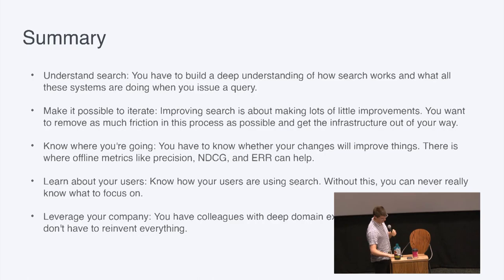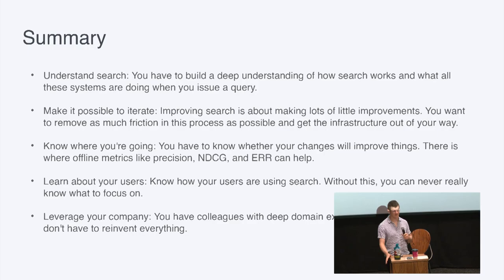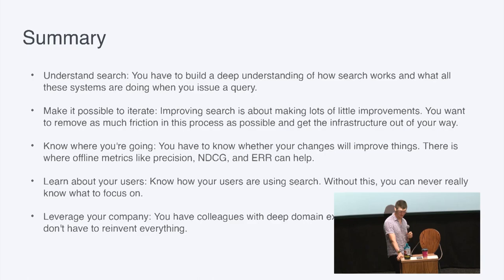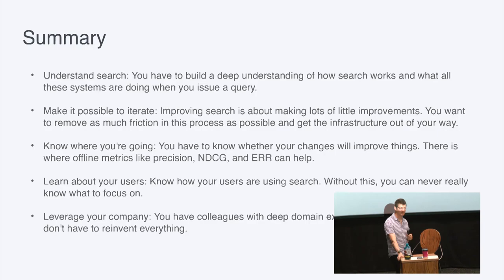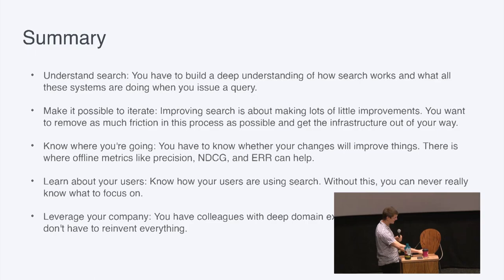Third: you need to know where you're going — this is where offline metrics come in. You need to know that if you make any query changes, you're not going to damage other queries too much. There is always tension between optimizing for certain use cases, but you need to understand the trade-offs you're making. Fourth: you have to learn about your users through online metrics like click-through rate, sessions, and abandonment. You have an idea of how search should work, but your users may have a different one — you probably have biases and mental models that are wrong on some counts.